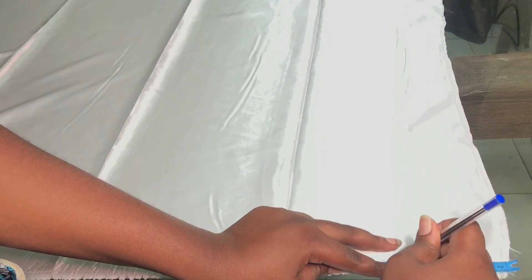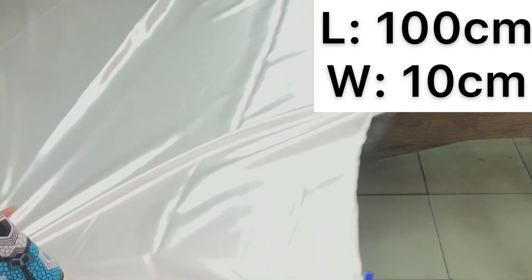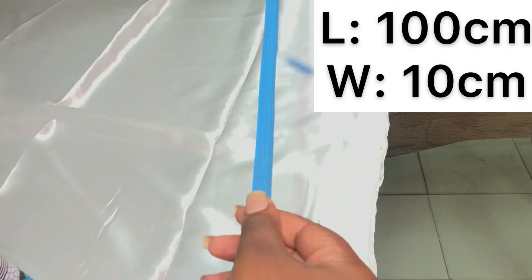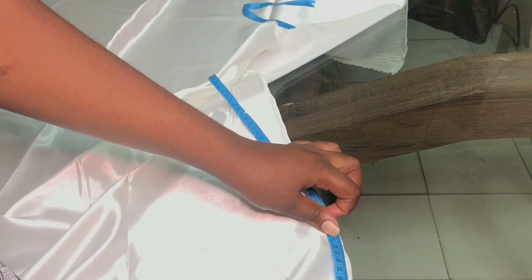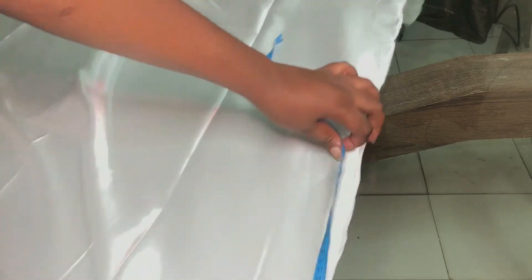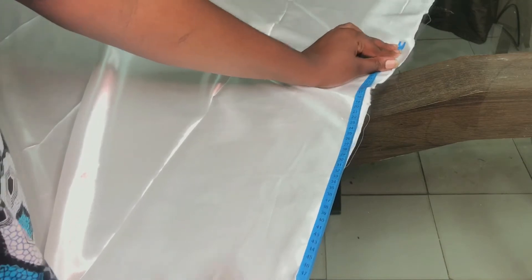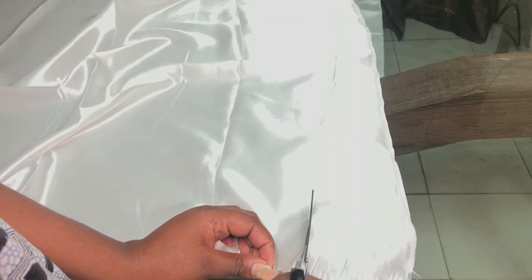You're going to go on your fabric and you're going to mark 10 centimeters from the end. Then you're going to measure out 100 centimeters long. The length is going to be 100 centimeters, so you're just going to measure that out and mark it down with a pen or a marker, whatever thing you're using. When you do that, you're just going to go ahead and cut it out, or in my situation, you could easily rip it since it is satin.